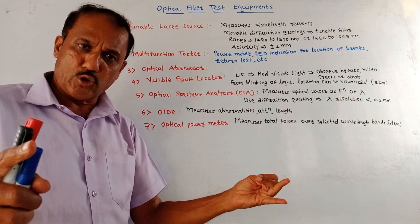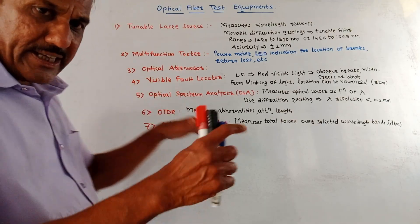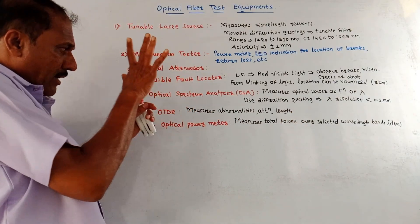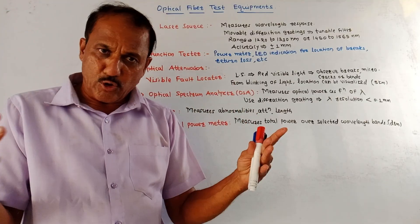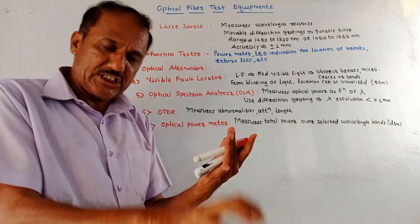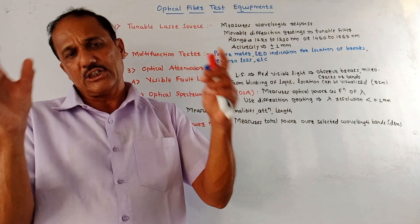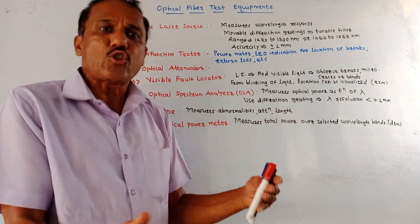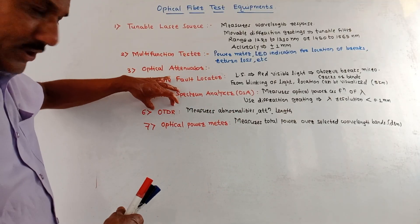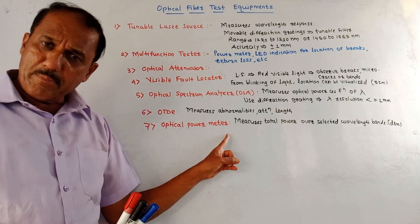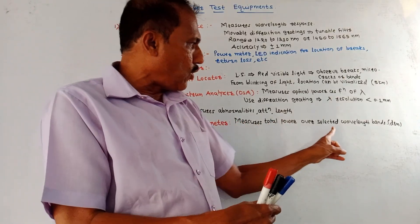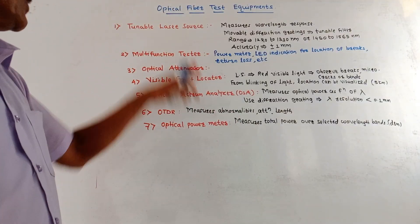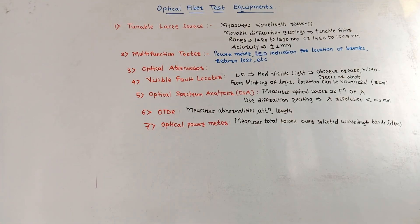Next important test equipment is OTDR, Optical Time Domain Reflectometer. We are going to study OTDR in detail because from the exam point of view, you may expect a separate question related to OTDR. In short, OTDR is used to measure the abnormalities taking place in the optical cable, as well as to measure the attenuation and the length of an optical cable. Next is Optical Power Meter, which measures total power over selected wavelength bands. This measurement of power is in terms of dBm, that is milli-dB. So this is about the different test equipments used in optical communication.